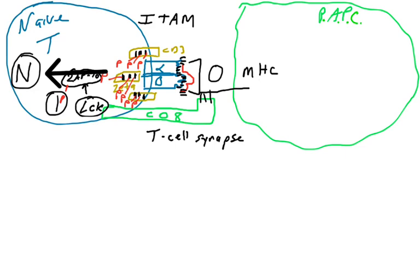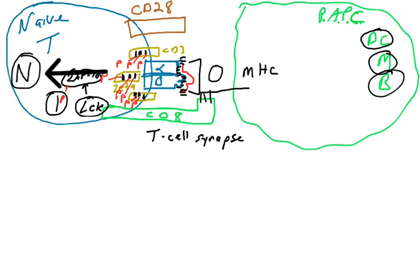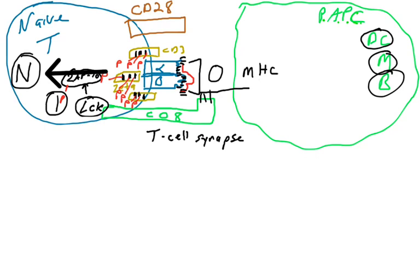The second signal involves a protein on the surface of the naive T-cell called CD28, which must be engaged for the T-cell to activate. This requires professional antigen-presenting cells — dendritic cells, macrophages, and B-cells — which are the only cells supposed to activate naive T-cells. All of these cells can sense an infection using receptors; they all have toll-like receptors, and if they bind a foreign molecule through a toll-like receptor, that sends a signal into the professional antigen-presenting cell.